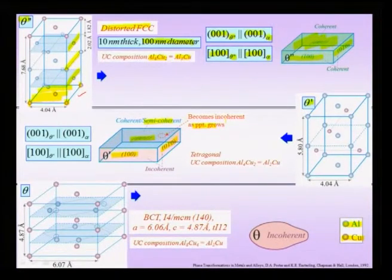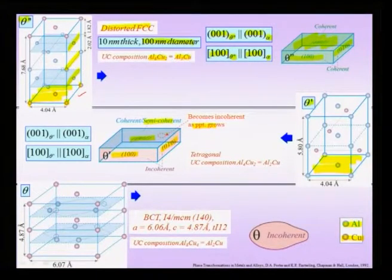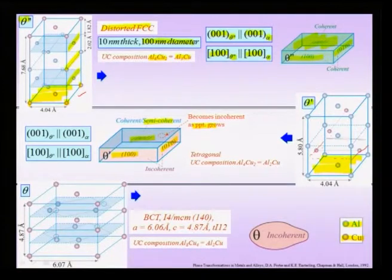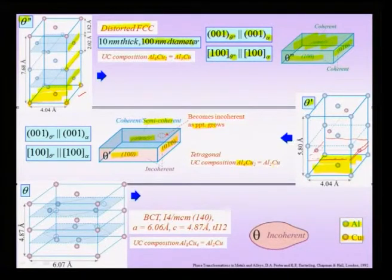In the theta prime structure, similarly to theta double prime, there are planes of aluminium and planes of copper. There is a copper plane at z = 1/4 of the unit cell. The unit cell composition is Al₄Cu₂, equivalent to Al₂Cu, meaning theta prime is richer in copper compared to theta double prime.